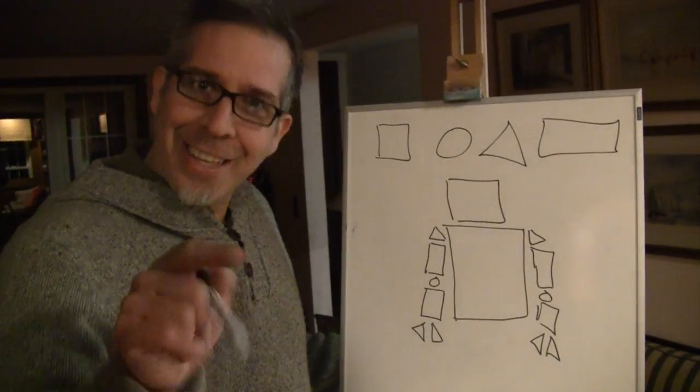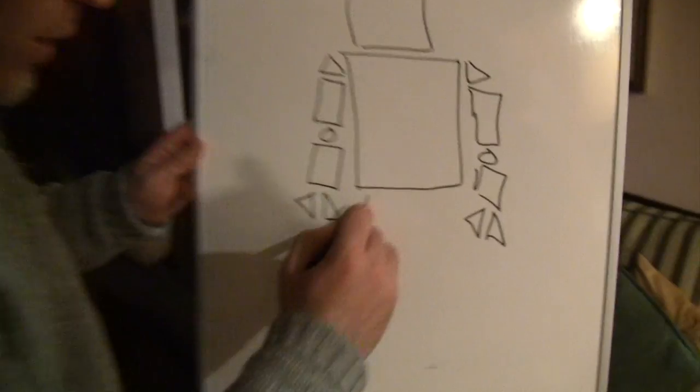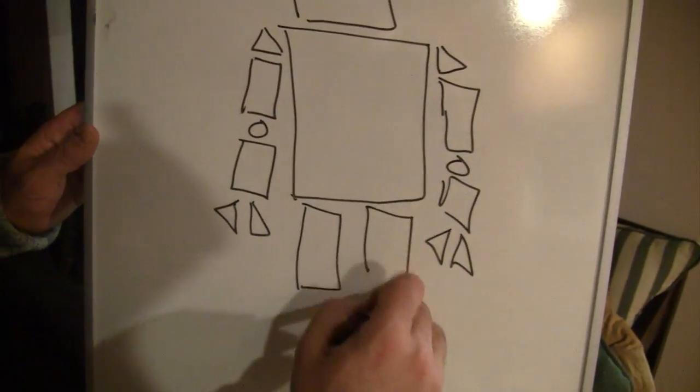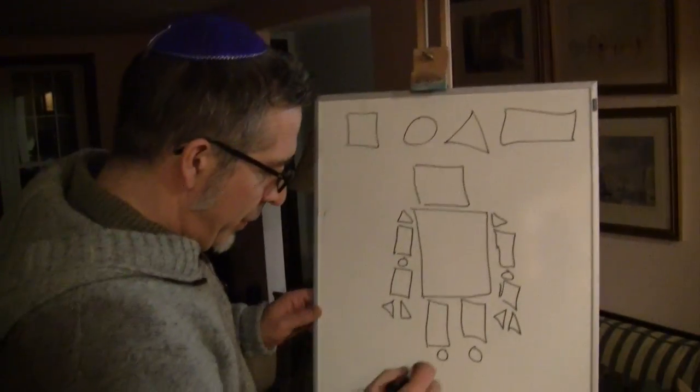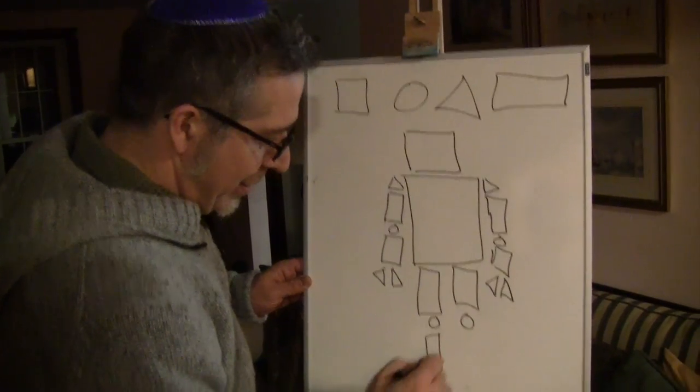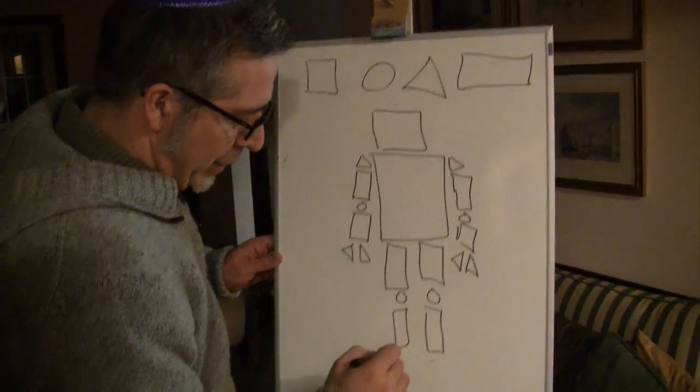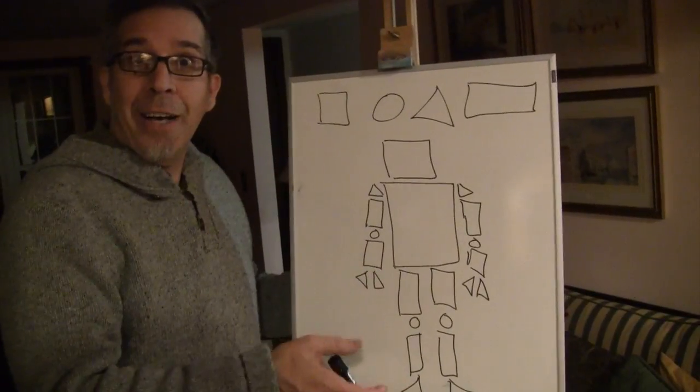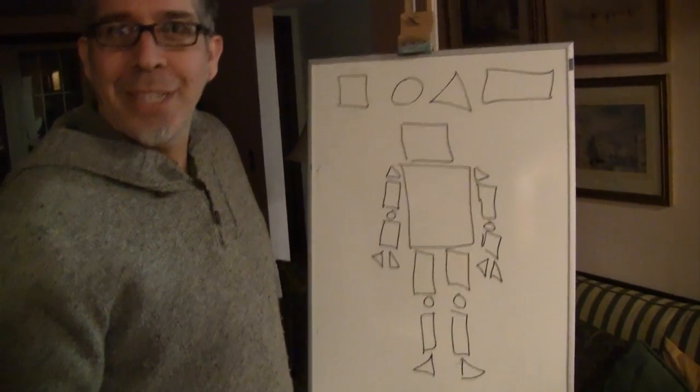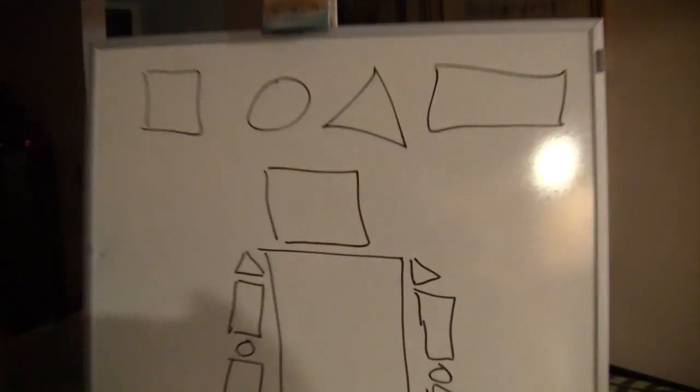You guessed it—the legs. Here we go. Rectangle, rectangle. Rectangle, circle. Those are knees. They're joints so he can bend and move easily. Rectangle, rectangle. Triangle, triangle. Now that's a robot. But there's something missing. You guessed it—the face.